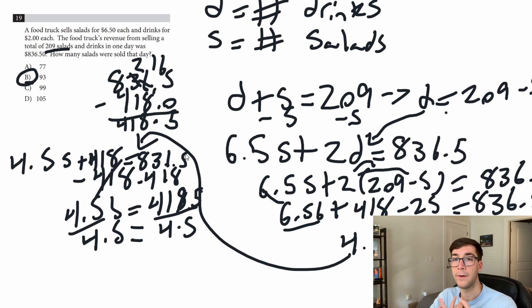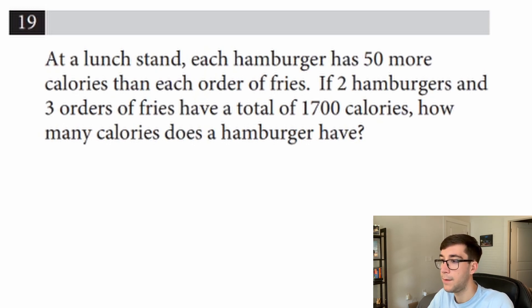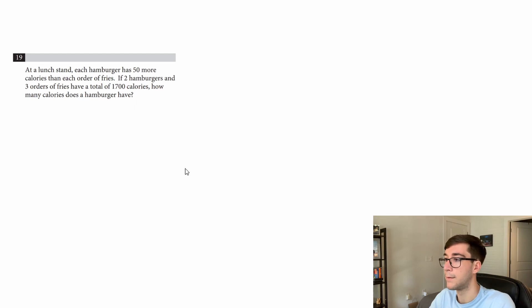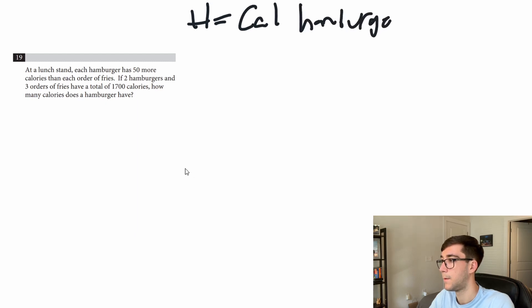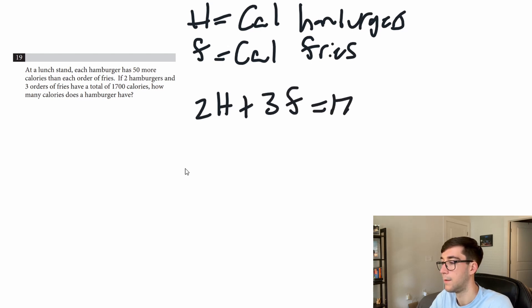To recap: step one identify the variables, step two write the two equations for amount and measurement, step three solve. Let's look at another word problem. At a lunch stand, each hamburger has 50 more calories than an order of fries. If two hamburgers and three orders of fries have a total of 1700 calories, how many calories does a hamburger have? Variables: h equals calories in hamburgers, f equals calories in fries. The total equation is 2h plus 3f equals 1700.